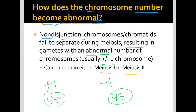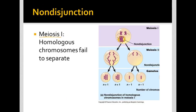This can happen during either meiosis 1 or meiosis 2. In meiosis 1, during that anaphase, that would be when homologous pairs fail to separate. It's probably just one pair in the cell. Here you can see that these homologous chromosomes fail to separate, then going into meiosis 2, we get an abnormal number of chromosomes there, and then these resulting gametes — two of them have N plus 1, and two of them have N minus 1.